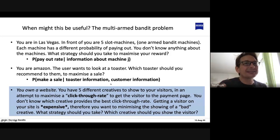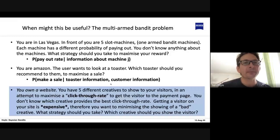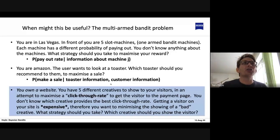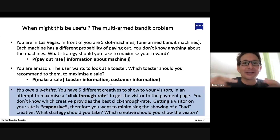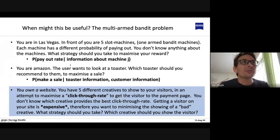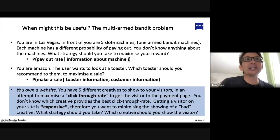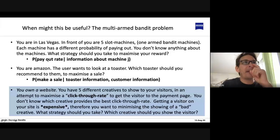There is a very famous problem called the multi-armed bandit problem. You are in Las Vegas, stood in front of five different slot machines — also known as one-armed bandits, because they have a lever you pull to make the wheels go round. Each machine has a different probability of paying out, but you don't know what that probability is. What strategy should you take to maximize your reward?